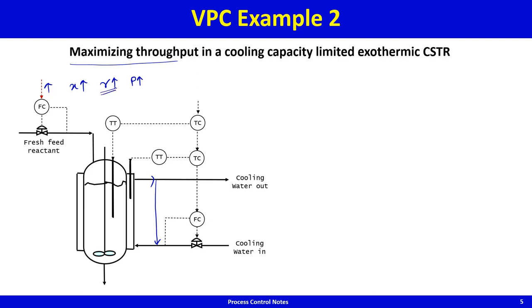As the reaction rate increases in this exothermic system, the heat released due to reaction also increases. To maintain reactor temperature, the coolant valve opening must also go up. As we increase throughput, this coolant valve maxes out — it becomes fully open — meaning there is no more reaction heat removal capacity. If we keep increasing feed beyond this point, reactor temperature control is lost.